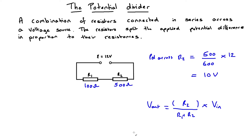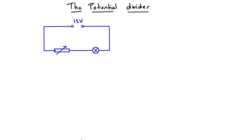And there we are — that's the simple potential divider circuit. One possible use of a potential divider would be to vary the potential difference across a device such as a filament lamp. Here we have a fixed voltage power supply of 12 volts.